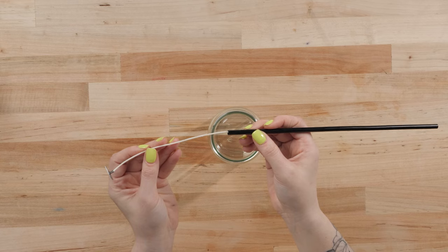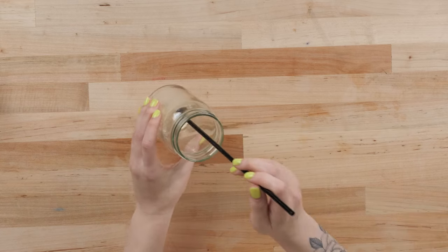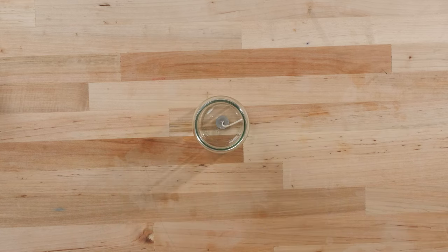Grab a straw from your kitchen, slide in the pre-tabbed wick with your wick sticker attached, and now you can easily place the wick in the jar.